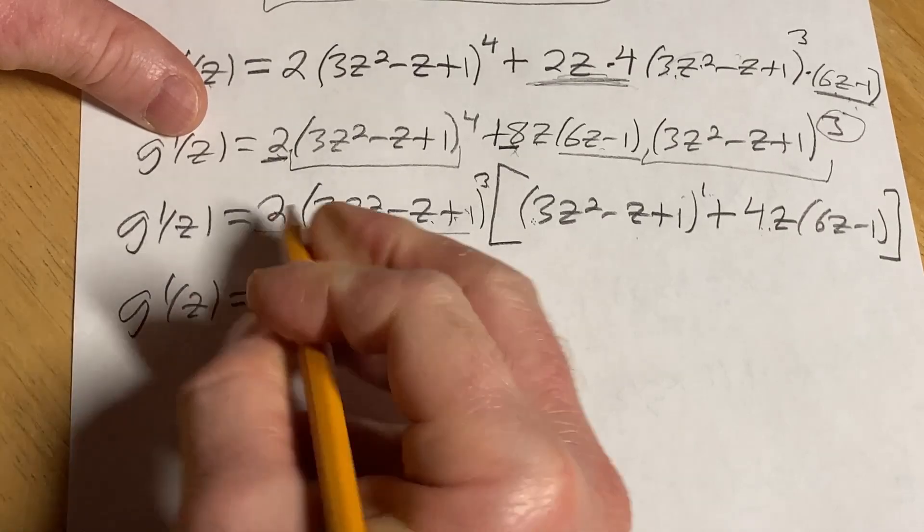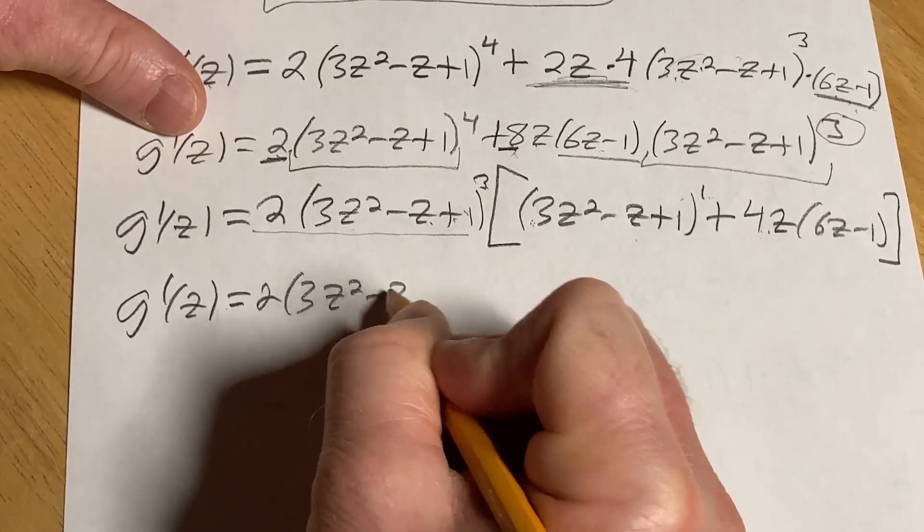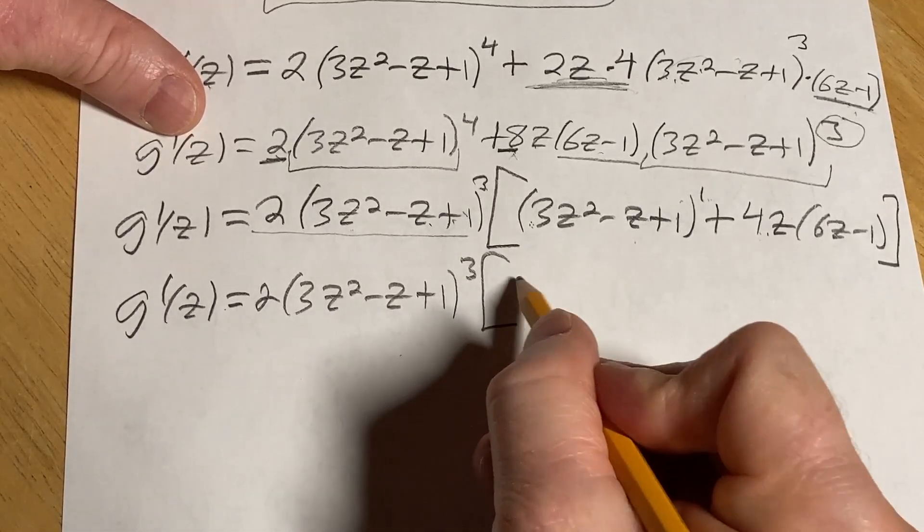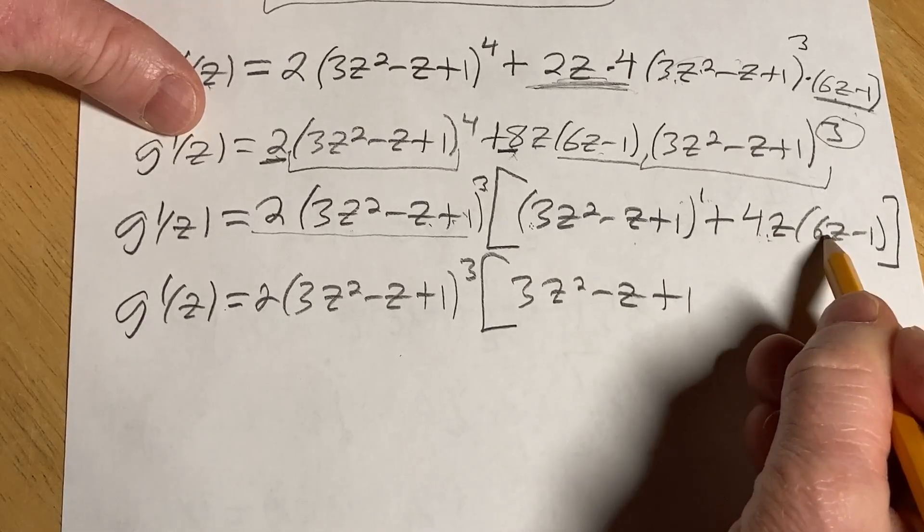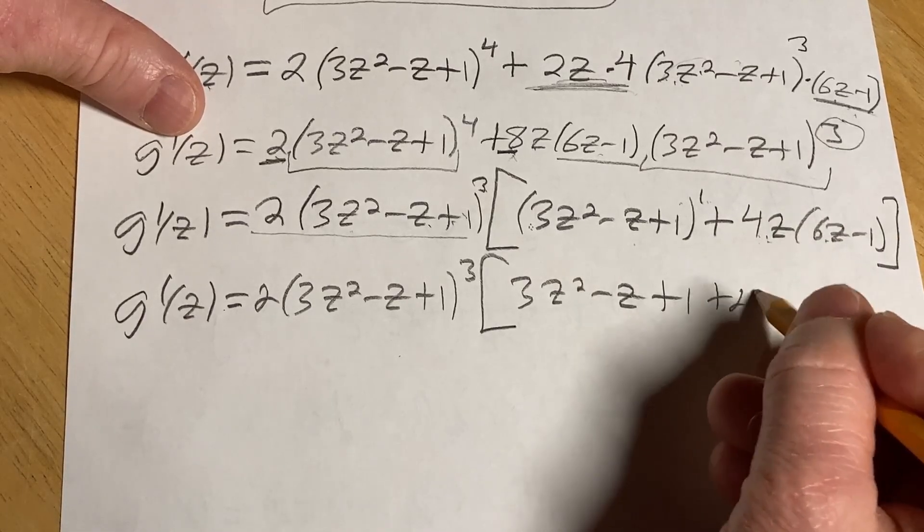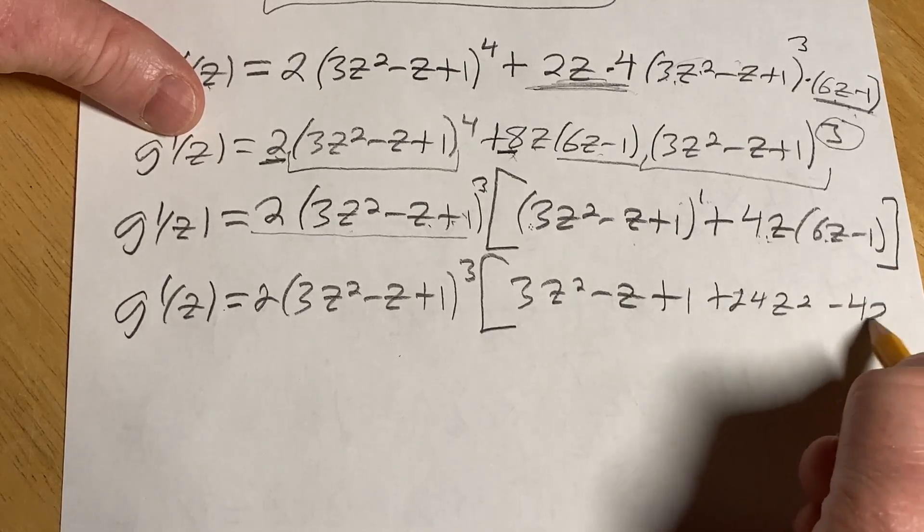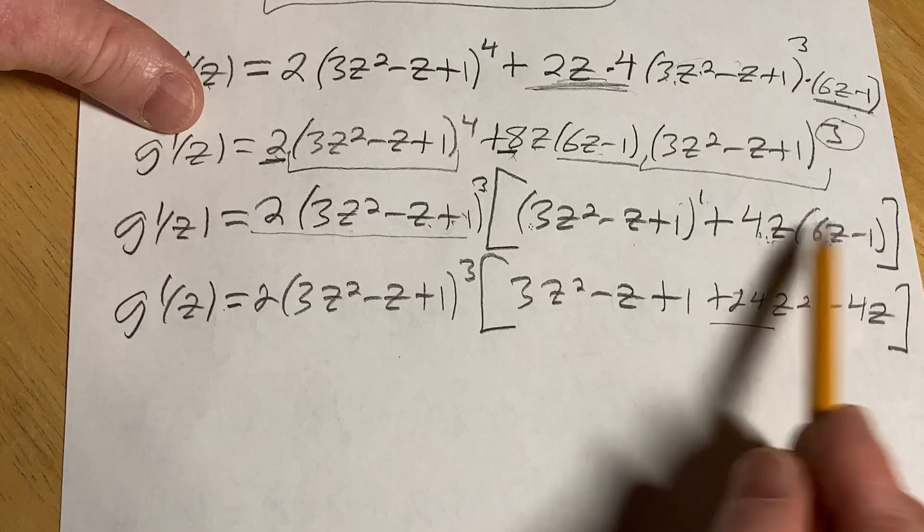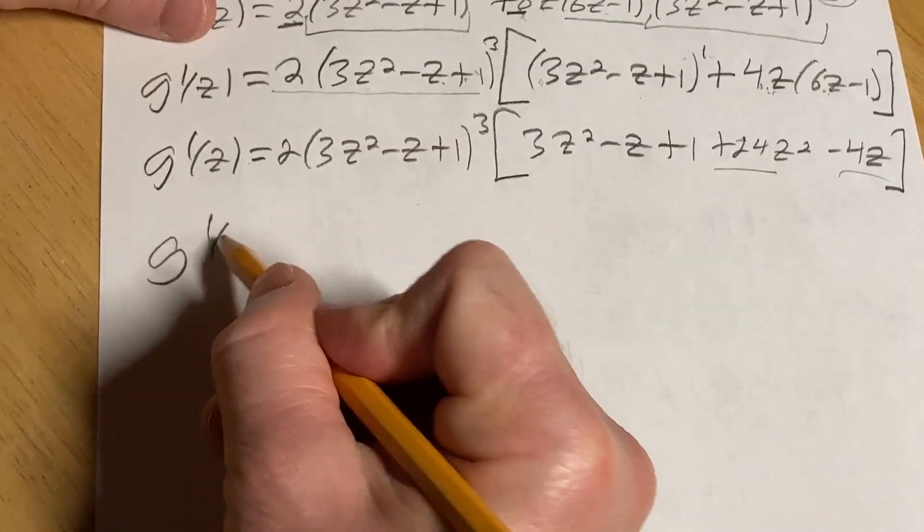g prime of z is equal to 2 parentheses 3z squared minus z plus 1 cubed. And let's just clean this up. 3z squared minus z plus 1. 4z times 6z is 24z squared. And then 4z times negative 1 is negative 4z. Right? So just 4z times 6z is that. 4z times negative 1 is negative 4z.